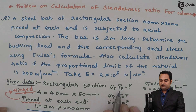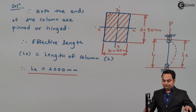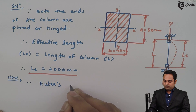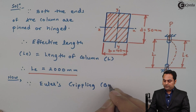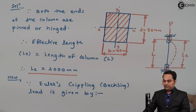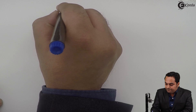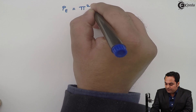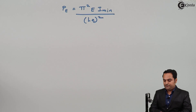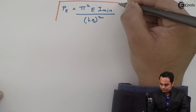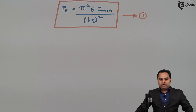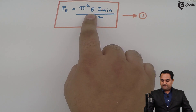The first thing to calculate is Euler's crippling load, also called Euler's buckling load. The formula is: P_E equals π²EI_min divided by effective length squared. The effective length value is known and E is given; the only unknown is I_min, the minimum moment of inertia.